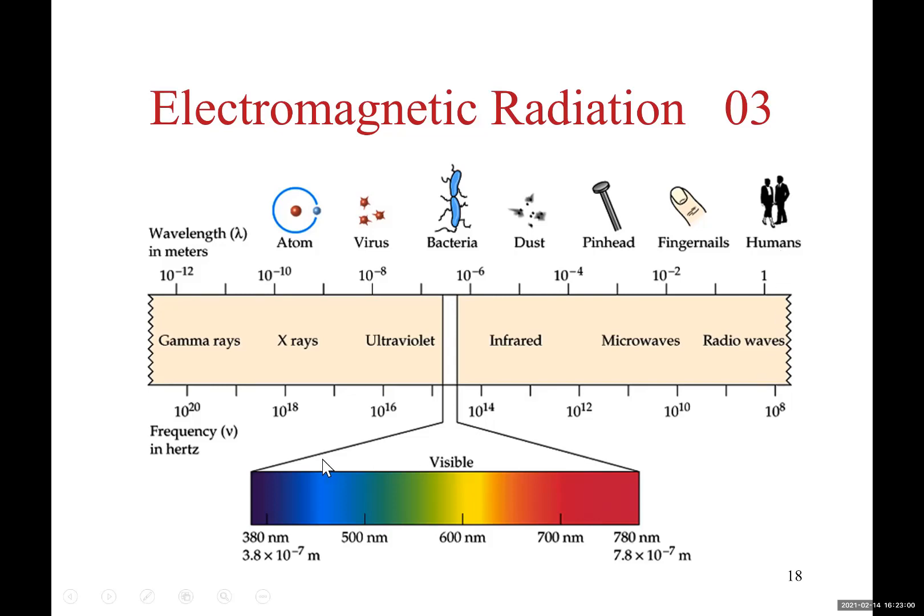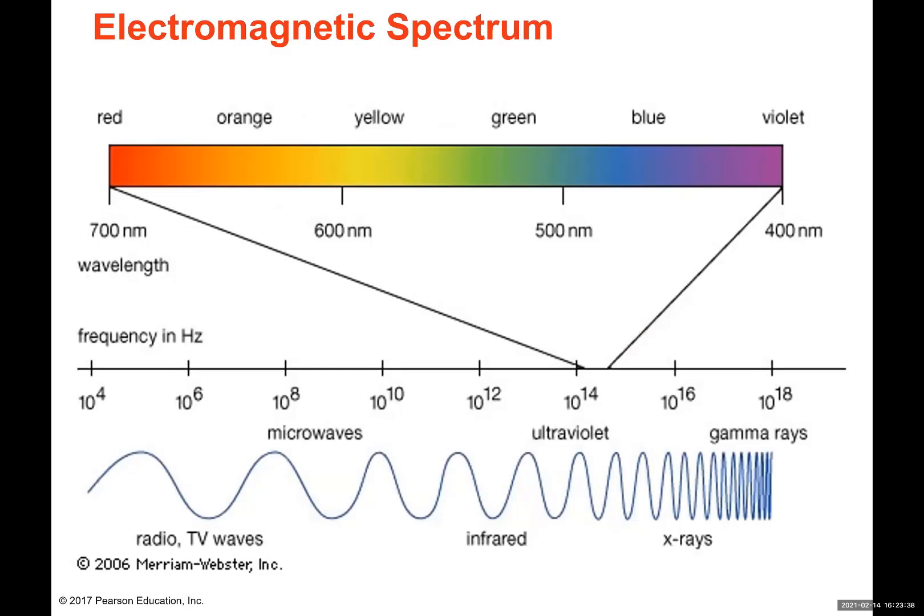As we said, frequency, which is number of oscillations, number of waves passing a point in space in one second, frequency is directly related with energy of electromagnetic radiation. Frequency is inversely related with wavelength of electromagnetic radiation. Larger wavelength means less energy and smaller frequency. This is the electromagnetic spectrum.